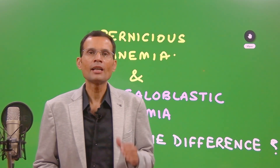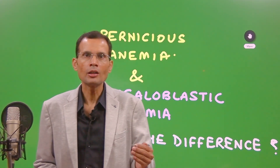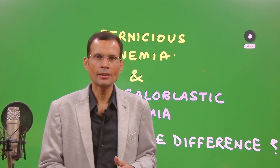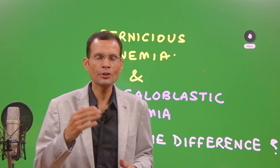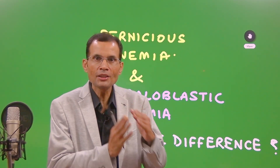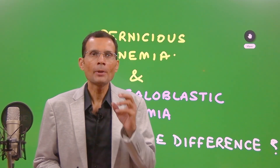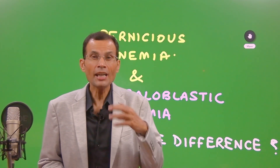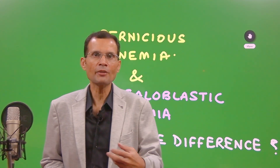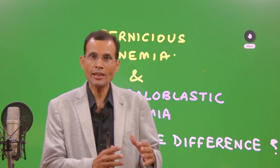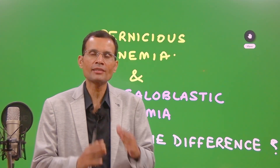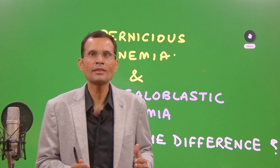Let's understand the literal meanings of these two types of anemias. Anemia means reduced hemoglobin, reduced RBC count, and therefore reduced oxygen-carrying capacity of blood. Pernicious literally means evil — something of evil nature, bad, grave, dangerous. So this type of anemia is going to have very bad, deleterious, and evil consequences on the body.